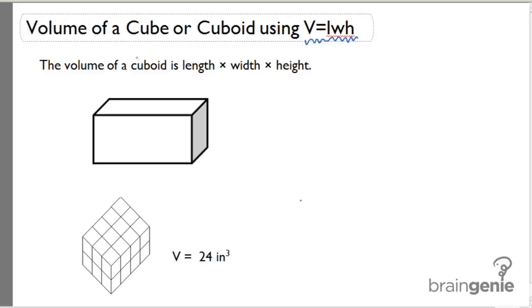The volume of a cuboid is length times width times height. That means that we find the length here, the width here, and the height of the cuboid here, and multiply the three dimensions together. Length times width times height, we'll get the volume.